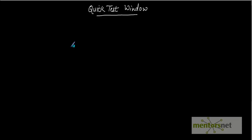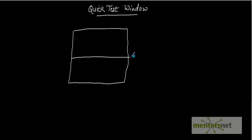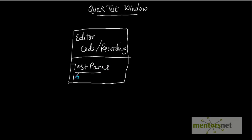In this video we'll traverse through the QTP test window, where we'll see how a new test can be created, how to open an already created test, how to save a test, and the different toolbars and functionalities available. The QTP test window is divided into two parts: the editor, where we write our code or recording lines get recorded, and the test panes, which provide information about the currently open test, such as syntax errors during debugging.